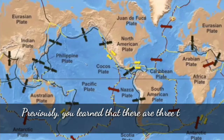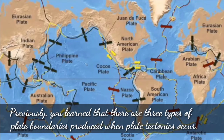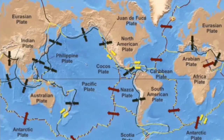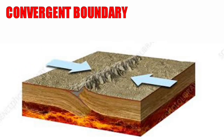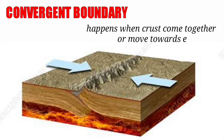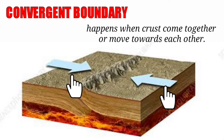Previously, you learned that there are three types of plate boundaries produced when plate tectonics occur. These are convergent, divergent, and the transform fold boundary. Today's lesson will focus on one, and that is convergent plate boundary, which happens when crusts come together or move towards each other, as you can see in the arrows shown in the illustration.